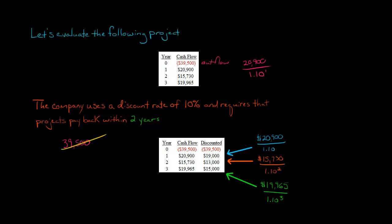So we got $19,000. So now that leaves us with $20,500 that is left because we recovered $19,000 discounted. We discounted it. And so we still have $20,500 to go.